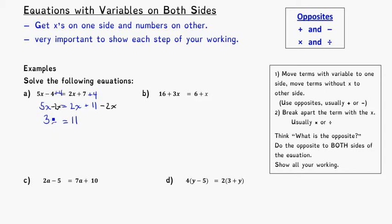As my last step, I need to break apart this 3 times x. The opposite of multiplying by 3 is to divide by 3, and I'll need to do that to both sides. So 3 divided by 3 cancel, leaving me with just x. And I'm left with 11 divided by 3. I can leave that as the fraction 11 over 3, or write it as 3 and 2 thirds, or as the decimal 3.66 repeating. Any of those three answers will work, but I often just leave it as a fraction, 11 over 3.